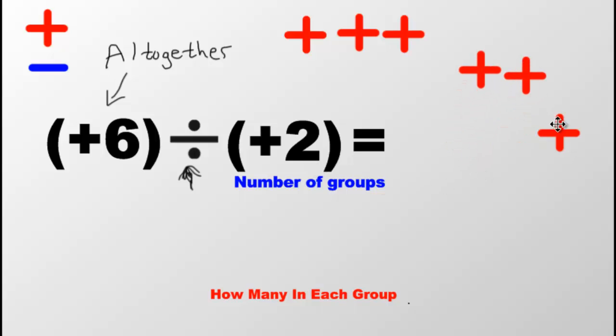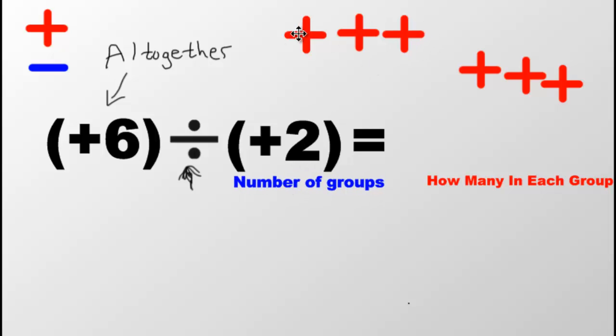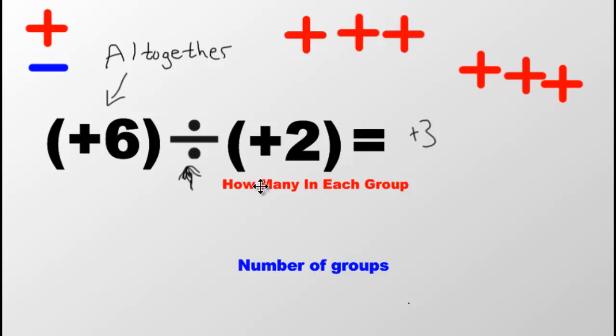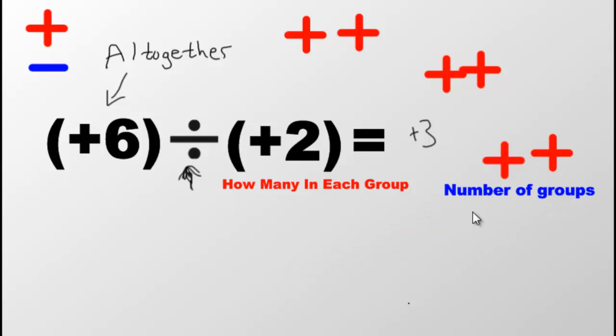Now, it's important to understand, whatever one you pick out of these two, the answer will be the leftover one. So if I choose to make two groups, the answer will be how many are in each group, which is now three positives. Positive three. However, if I decide to put two inside of each group, then my answer would be the number of groups. So you count the number of groups. You say one, two groups, three groups.